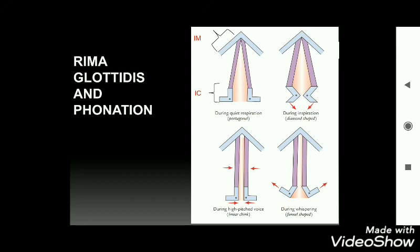The rima vestibuli is the space between the two vestibular folds, and the rima glottidis is the space between the two vocal folds. During quiet respiration, the rima glottidis appears pentagonal; during inspiration it appears diamond-shaped; and during high-pitched voice it appears as a curved shape.